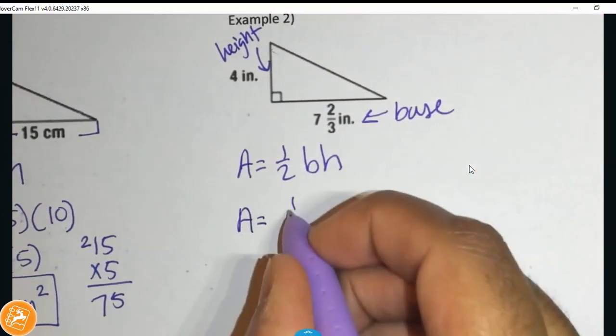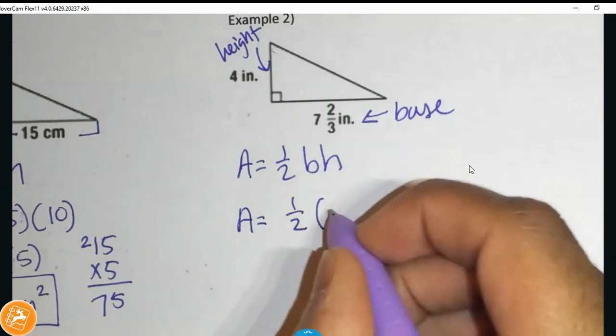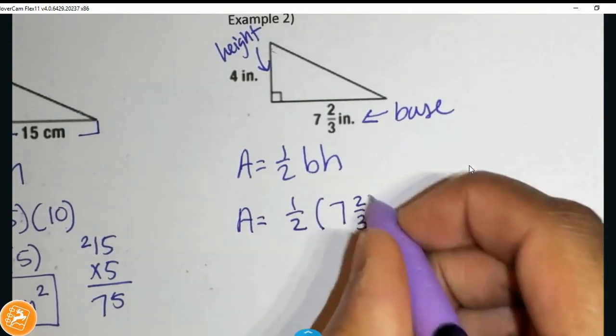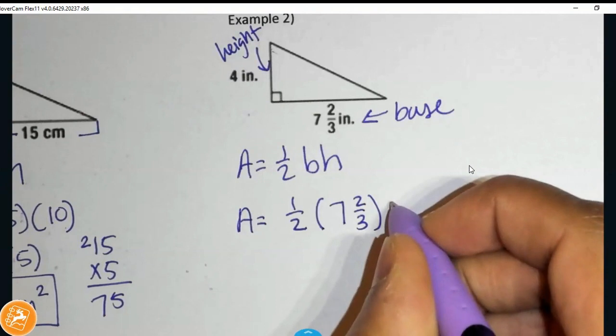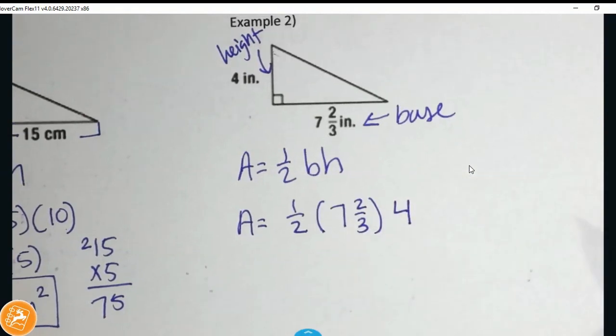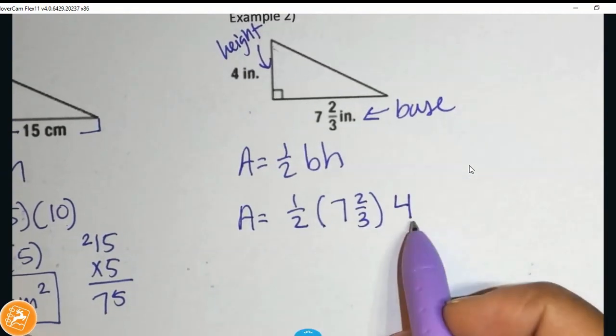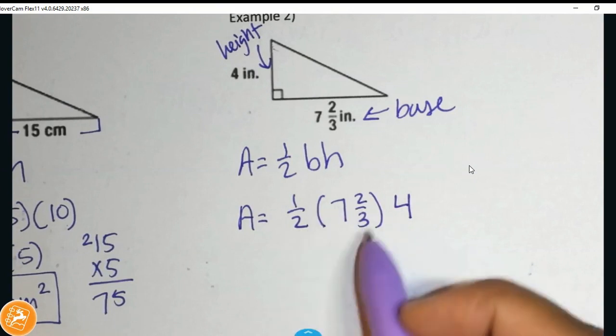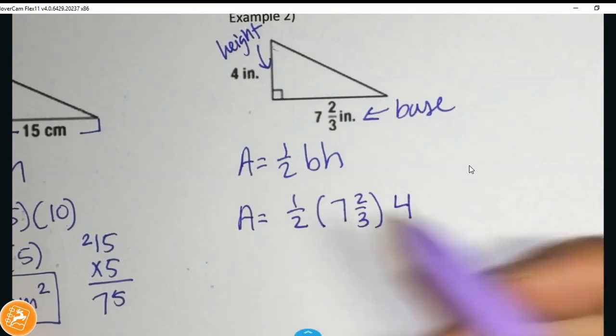So, area is going to be equal to one half times my base, which is 7 2/3, and my height, which is 4. Now, again, we could take one half of 4 and then work it out, or we could do half of this amount and work 4. It's really up to you.